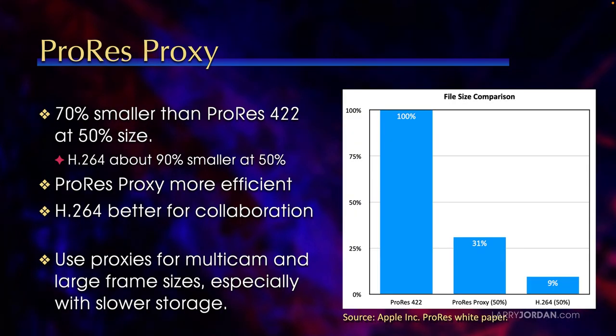Starting first with ProRes Proxy, it's 70% smaller than ProRes 4-2-2 with a frame size which is 50% the size. So we save 70% in file space by shifting over to ProRes Proxy. If we move to H.264, it's about 90% smaller than ProRes 4-2-2, again at 50% resolution.